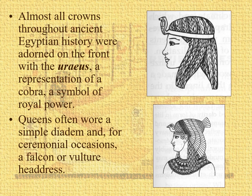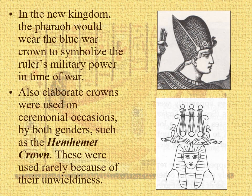Throughout history, the crowns were adorned on the front with the Uraeus — very characteristic of the Egyptians — which is basically this cobra. Sometimes you have a falcon or vulture headdress. The blue war crown symbolizes the ruler's military power. And this is the Hem Hemet crown — sounds a little bit like a sneeze — a very elaborate, heavy crown, very unwieldy, used only for ceremonial purposes.